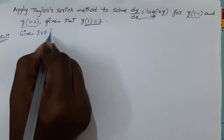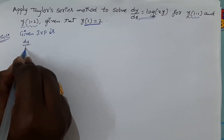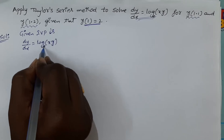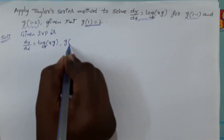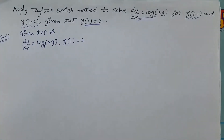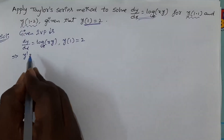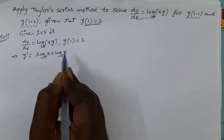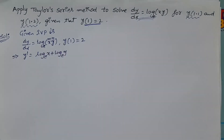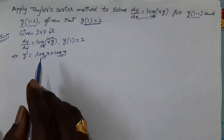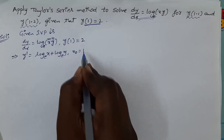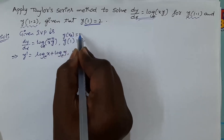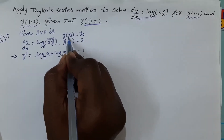The given initial value problem is dy/dx = ln(xy), with initial condition y(1) = 2. This can be written as y' = ln(x) + ln(y), because log(mn) = log(m) + log(n). Here x₀ = 1 and y₀ = 2, by comparing with the general initial condition y(x₀) = y₀.